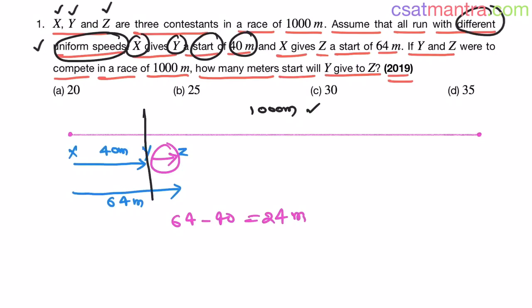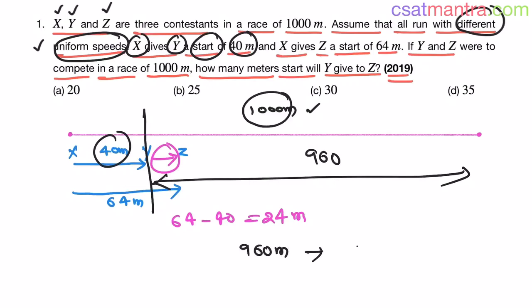Now see, for Y this is the starting point. How much distance is this? 960. 1000 minus 40 equals 960. So for a 960 meters race, Y gave Z 24 meters start.